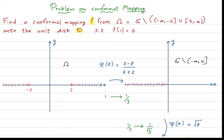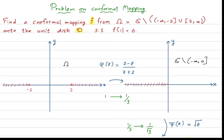Hi everyone. In this video I am going to discuss another problem in complex analysis. This problem is related to conformal mappings. The problem is: you have to find a conformal mapping f from the domain omega onto the unit disk, and this conformal map should satisfy the condition that one should be mapped to zero.